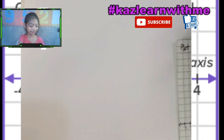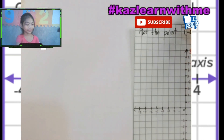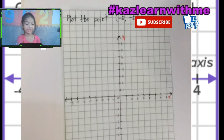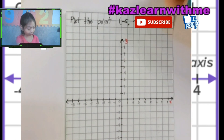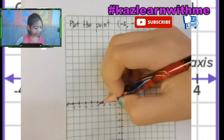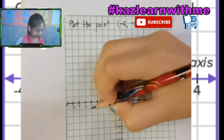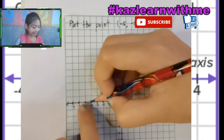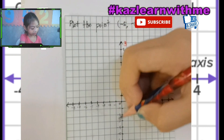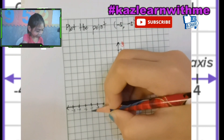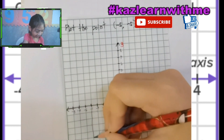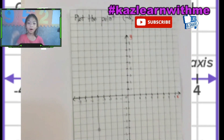We got the point of negative five and negative five. The first number always has to be at X and the second number is always at Y. The first number is negative five — here it is, negative five. And then the next one is also negative five: one, two, three, four, five.